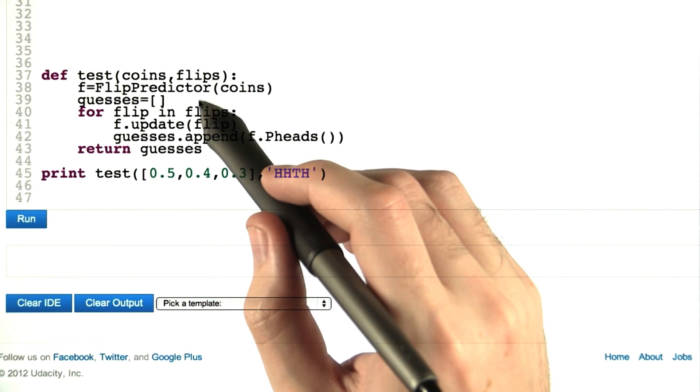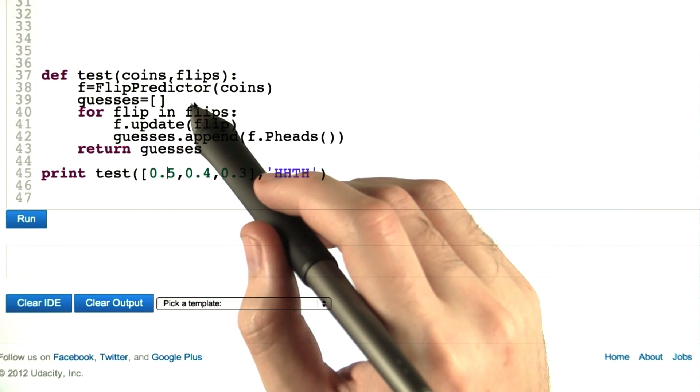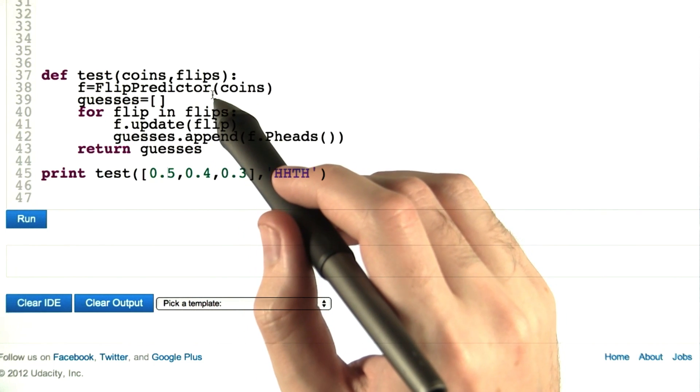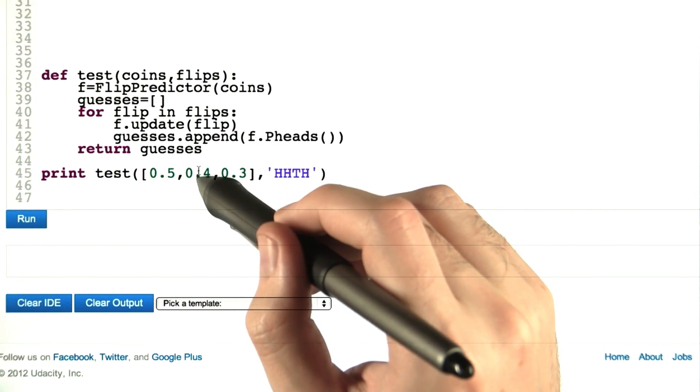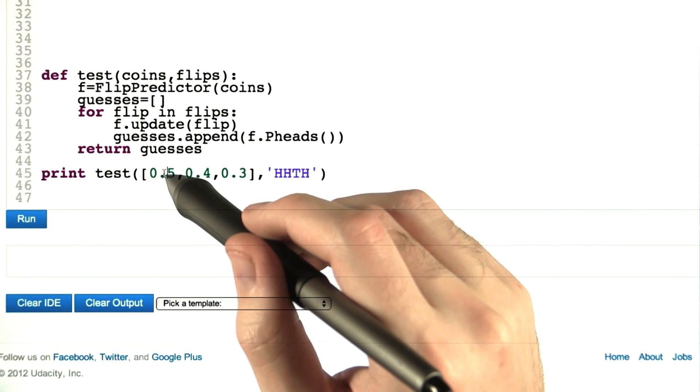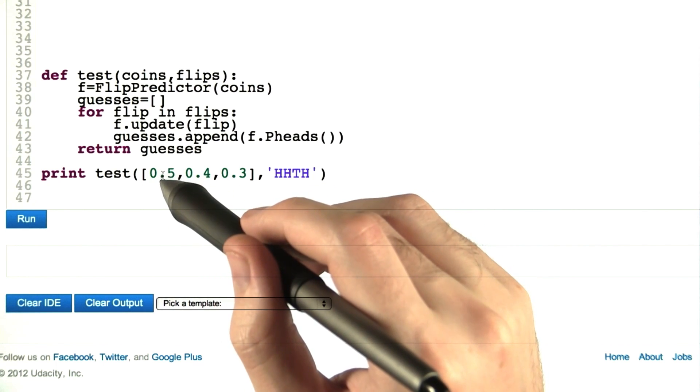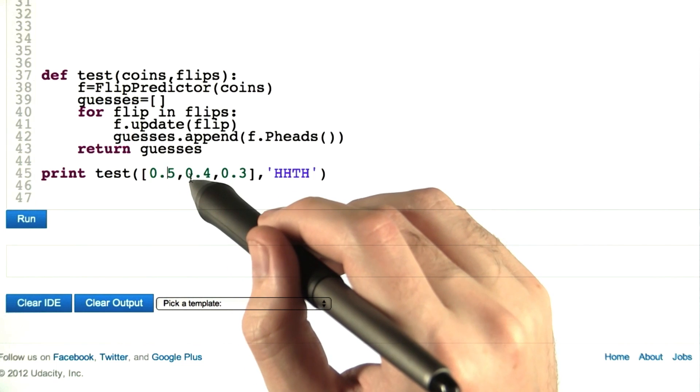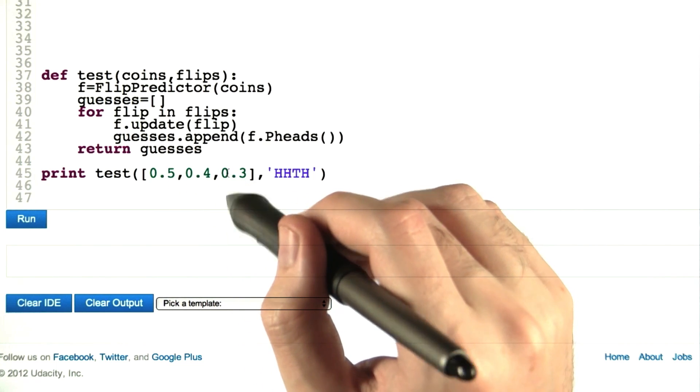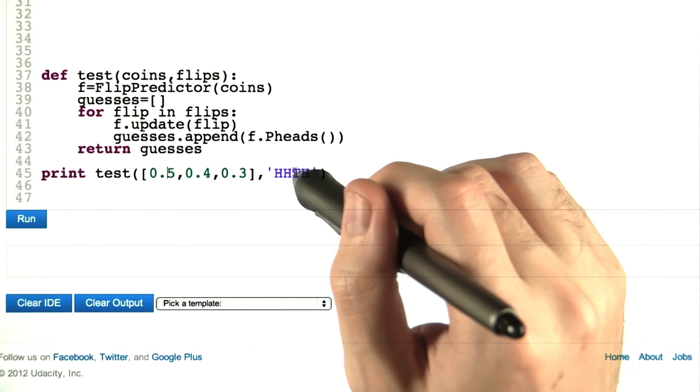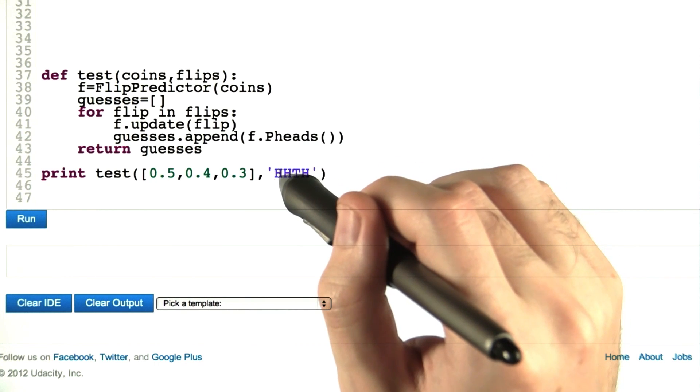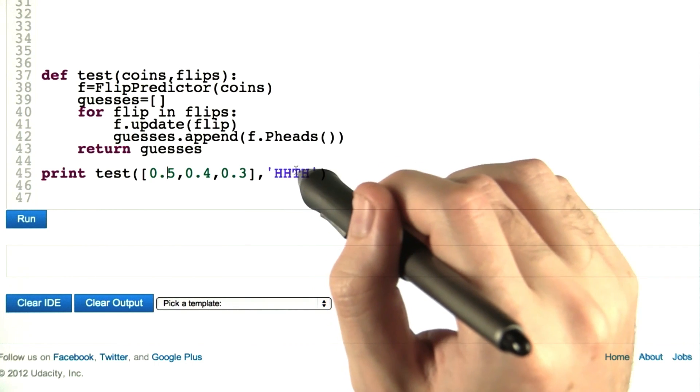What we're going to ask you to write is a Python class called flip predictor that's going to take the set of coins in the bag. In this case, coins with probabilities of landing on heads of 0.5, 0.4, and 0.3. Then we're going to flip the coin several times. In this case, the results were heads, heads, tails, and heads.